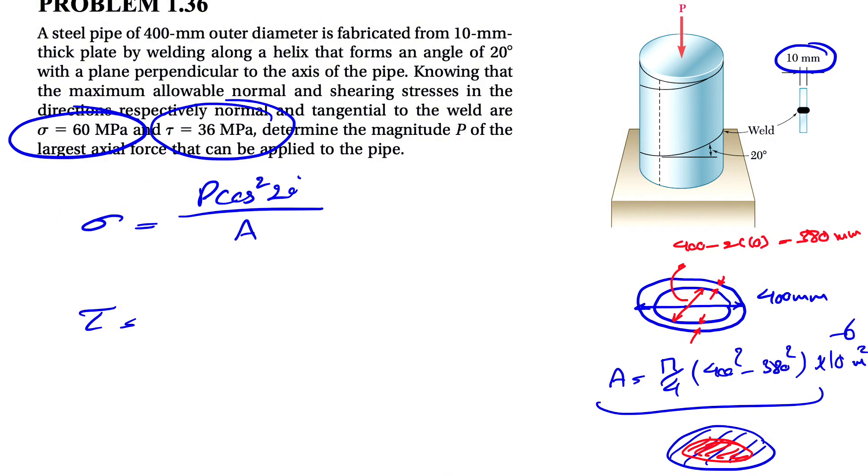And for finding the shearing stress, we're going to get P sine of 20 degrees times cosine of 20 degrees over A. Again, in the previous video, I showed where these two formulas are coming from. So feel free to check it out. At the end of this video should be showing up on the screen. So feel free to watch it if you need to.